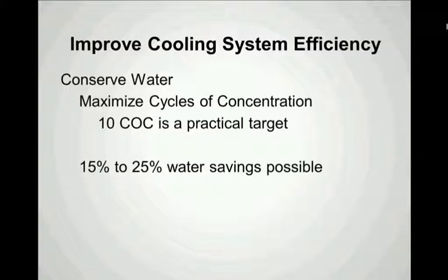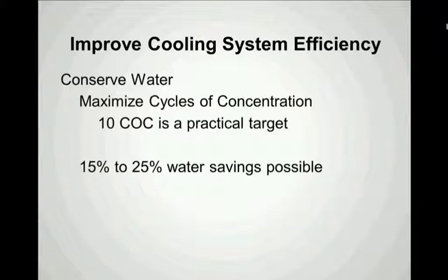First, in order for a system to operate efficiently with regard to water consumption, we need to focus on maximizing the cycles of concentration. A practical target for many cooling water systems is 10 cycles of concentration. One way to estimate your limit is through the cycle of concentration estimator tool, which calculates that based on your makeup water quality. If the result is less than 10 cycles, you can ask whether there are alternative methods for pre-treating the makeup water to allow higher cycles of concentration.